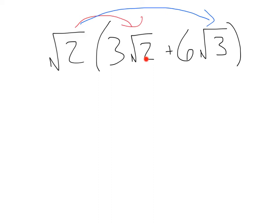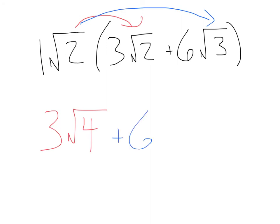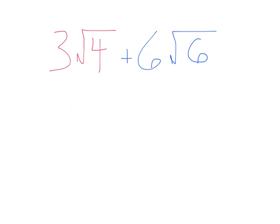The square root of two is going to multiply both terms inside the parentheses. So square root of two times three square root of two: the three times one gives you three, and square root of two times square root of two gives you the square root of four — doing two times two. Then we have square root of two times six square root of three: six times one gives plus six, and square root of two times square root of three gives square root of six. Now let's simplify: the square root of four is two, since we get a pair of twos. So that gives us three times two, which is six.